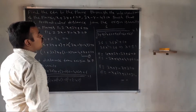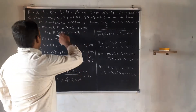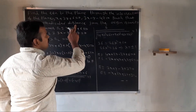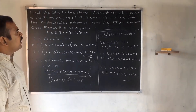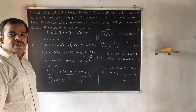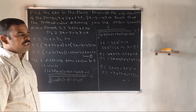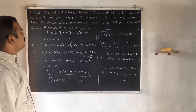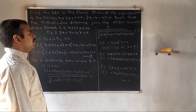Find the equation to the plane through the intersection of the planes such that the perpendicular distance from the origin is unity. The equation of the plane through the intersection is: first plane plus lambda into second plane equal to 0.